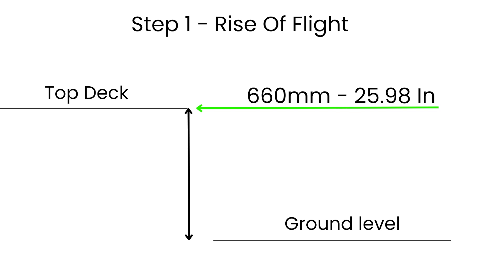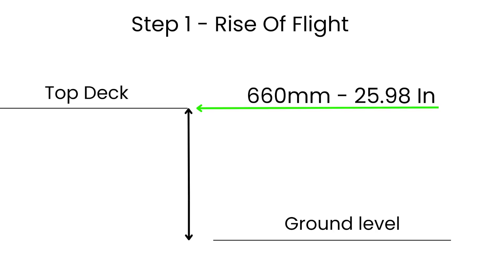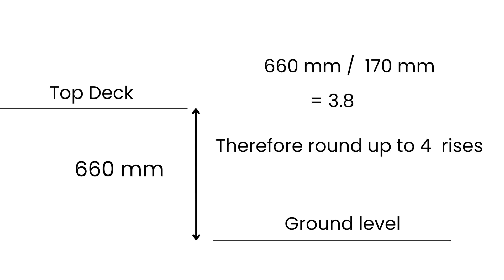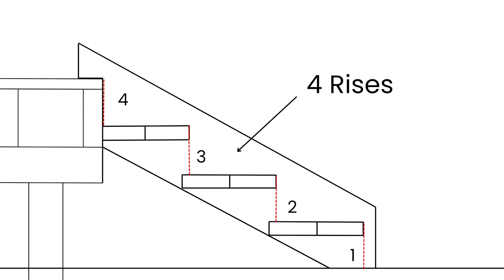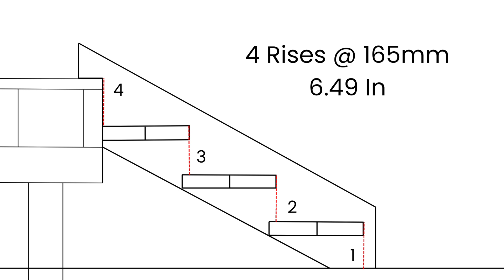The first step is to obtain the rise of the flight of stairs — the height from the top of the stair landing to the ground level where the stairs begin. In this project the height of the landing is 660 millimetres from ground level. To establish the number of risers, I'll begin by dividing an average outdoor riser height of about 170 millimetres into the rise: 660 divided by 170 equals 3.8. Rounding up to four equal risers, 660 divided by 4 equals 165 millimetres. So there will be four equal risers from the ground level to the top of the stair landing.